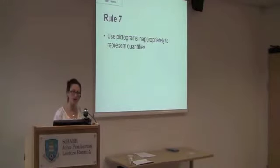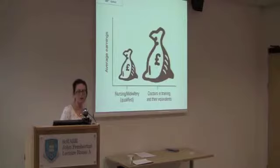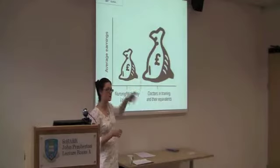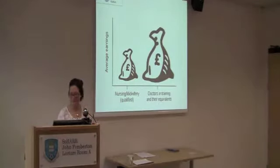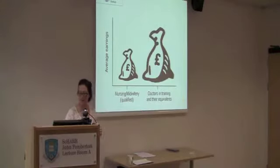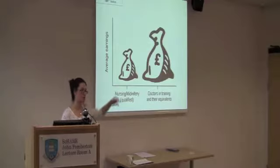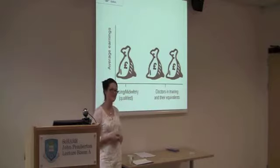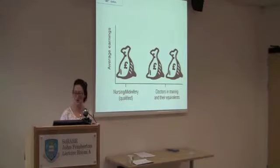Rule seven: use pictograms to represent quantities. This one looks at average earnings — doctors in training apparently earn twice as much as qualified nurses and midwives, twice as much. But it looks like four times as much because of the scale of the pictogram. This is really favoured by newspapers — they love scaling pictograms — but it makes the differential look much greater than it actually is. A true representation would be to use two equal figures rather than scaling one up.